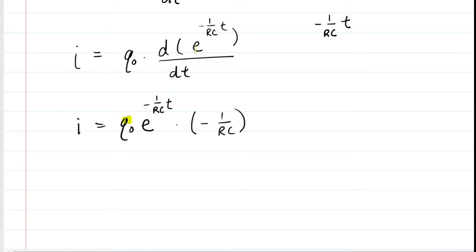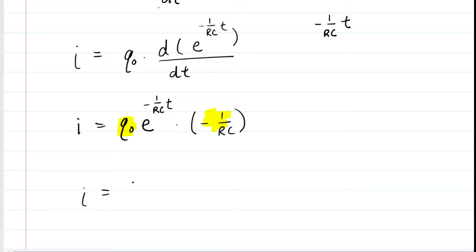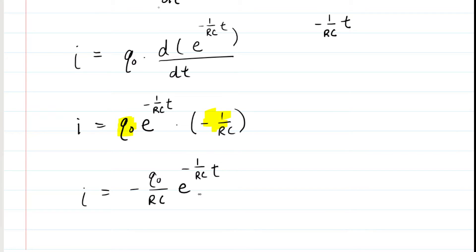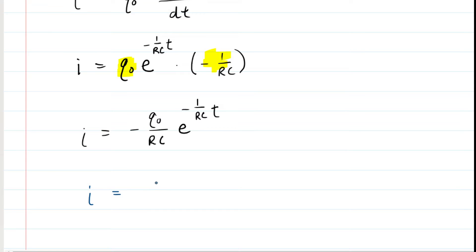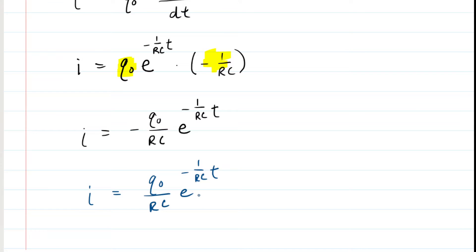Cleaning up: multiply the initial charge q₀ by negative 1 over RC, giving negative q₀ over RC multiplied by the exponential term. The negative sign is often omitted because it simply tells us the charge on the capacitor is decreasing. We drop the negative sign and rewrite the current expression without it — this gives the current flowing through the circuit.